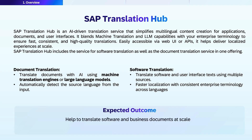Translate documents with AI using machine translation engines or large language models. The service automatically detects the source language from your input. For software translation, localize software and user interface text using multiple sources, including verified repositories and approved company terms. You get faster localization with consistent enterprise terminology across languages. This best practice lets you leverage TranslationHub to translate software and business documents at scale, reducing manual efforts.